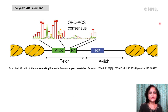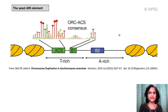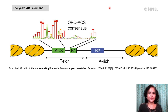The yeast ARS element has a conserved 11 base pair ARS consensus sequence or ACS, and three additional elements B1, B2, and B3, which are important for origin activity. ORC binds these elements — ACS and B1 — and then recruits additional proteins such as the MCM helicase to the origin, which binds at B2, while other factors bind at B3. The ARS elements are AT-rich. This makes sense because AT base pairs have only two hydrogen bonds, so AT-rich DNA segments are easier to melt, which is required for initiation of DNA replication.